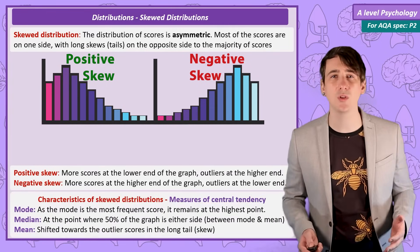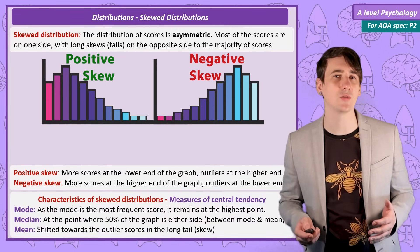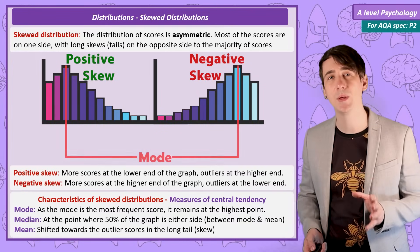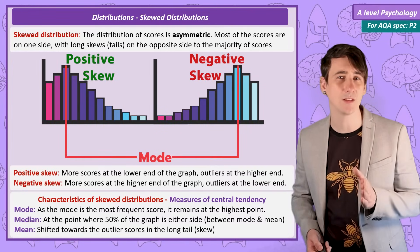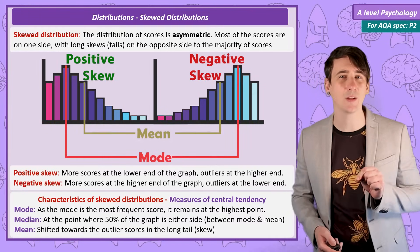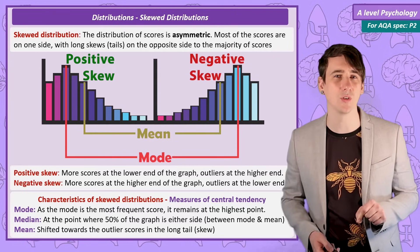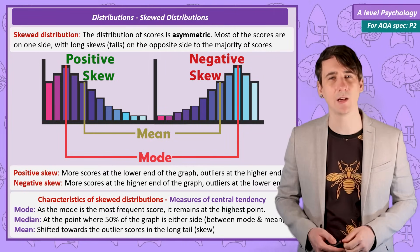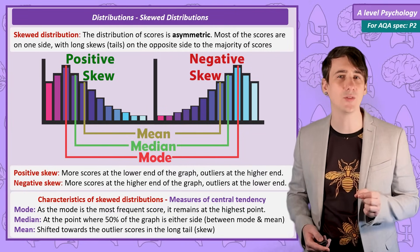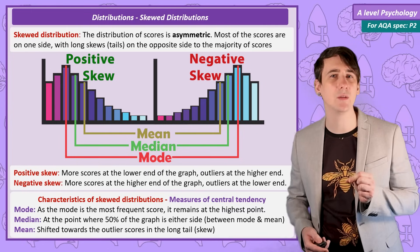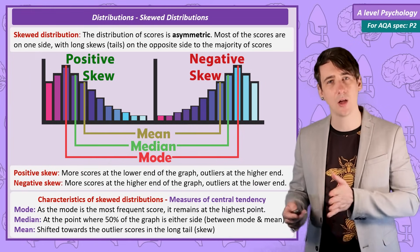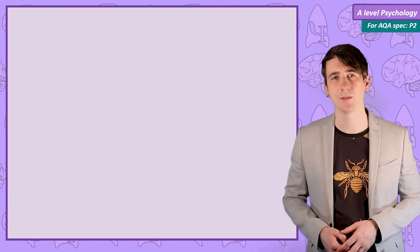Positive and negative skews also change where the measures of central tendency appear on the graph. The mode will always be at the highest point on the graph, as it's the most frequent score. The mean is affected by extreme scores and so it's pulled towards the tail of the graph. The median, being the central number, sits in between the mode and the mean at the point where there's 50% of the area under the graph on both sides.